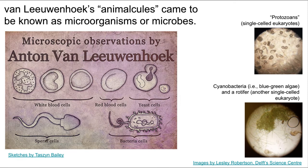Leeuwenhoek was infinitely curious. He pointed these microscopes at just about anything he could think of and is credited with the initial observation of many different cell types. When he looked at seawater or pond water, he noticed little things moving around in those samples, which he called 'animalcules' — these came to be known as microorganisms, or microbes. The photographs on the right were taken with replicas of Leeuwenhoek's microscopes and probably look a lot like his first views of the microbial world.